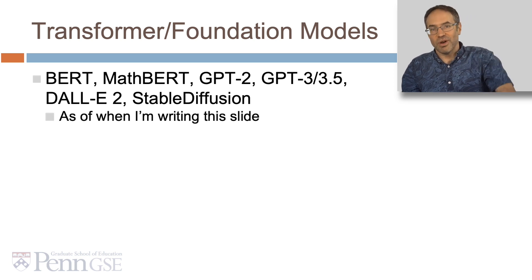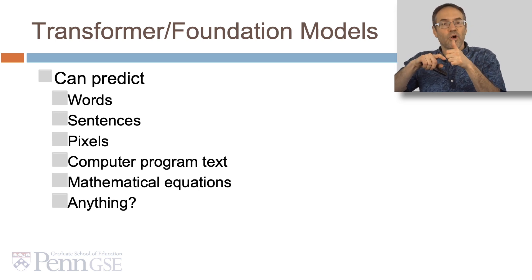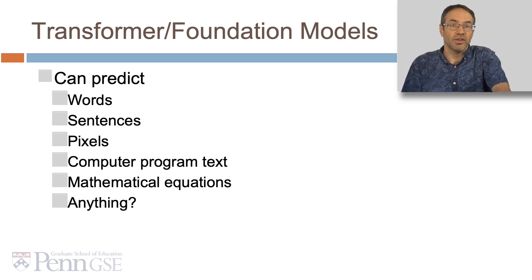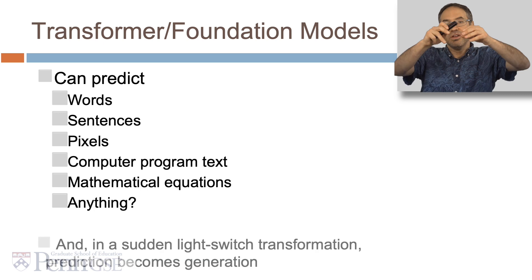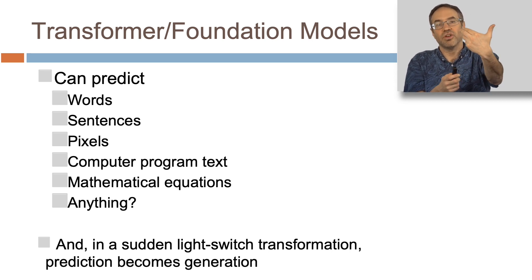These are the ones, as of when I'm writing this slide—who knows what there will be by the time you're watching this. Transform models can predict all kinds of things: words, sentences, pixels, computer program text, GitHub Copilot, mathematical equations. We don't know all the things that they can predict yet, but they're super powerful. What's really fascinating about these things is that in a sudden light switch transformation, prediction becomes generation. Because when you can predict things that are sufficiently complicated, you can use that process of prediction to become a process of just generating it from scratch.